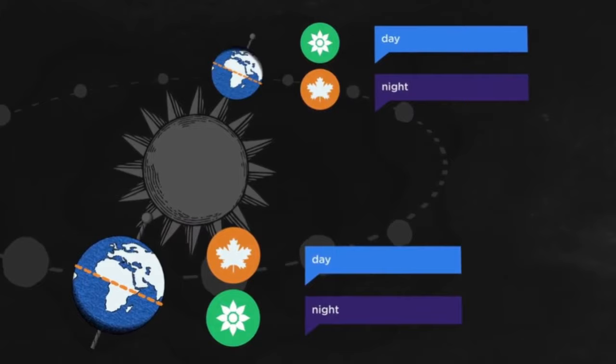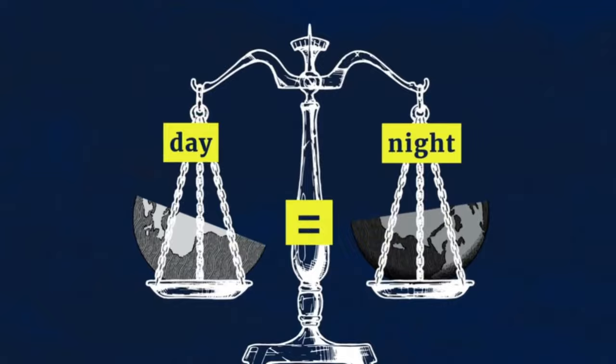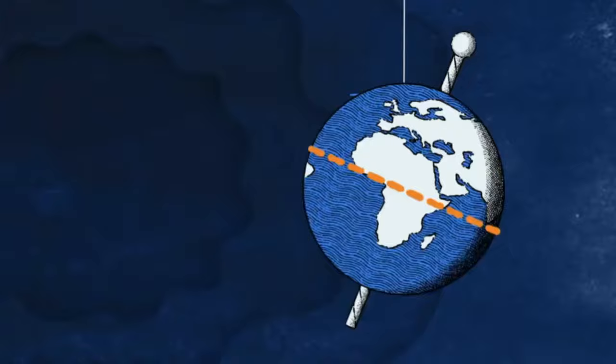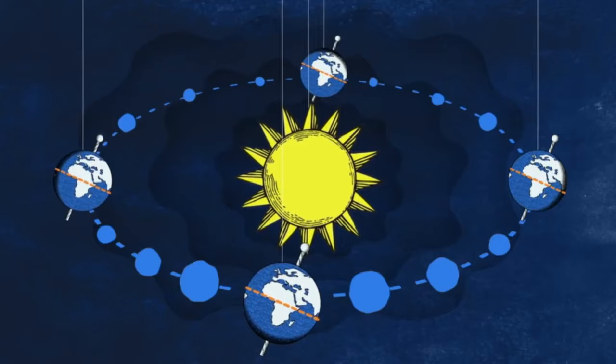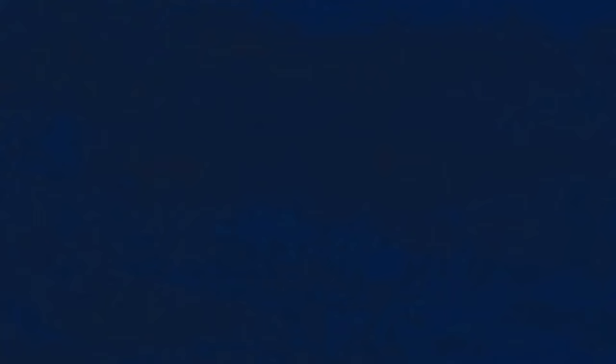Here's a handy mnemonic device: equi means equal, and nox means night, which tells you that the day and the night are of equal length. So at the end of the day, while solstices and equinoxes are related, they happen at different times of the year. Just remember that solstices are the longest and shortest days of the year, while equinoxes occur when the day and night are equally as long. Regardless of whether it's a solstice or an equinox, there's bound to be a celebration happening somewhere.